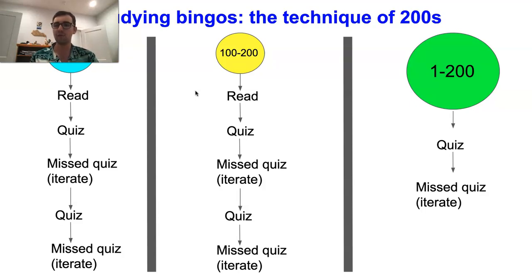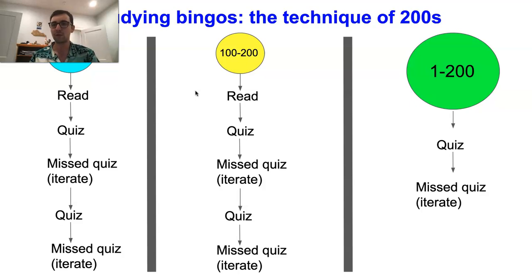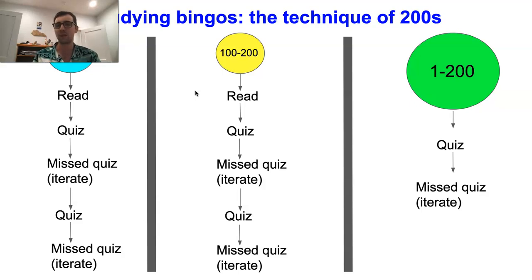I split the group of 200 into two smaller groups of 100. So let's say I'm studying my first 200 bingos ever — probability 1 through 200 sevens. My first group would be probability 1 through 100, and my second group would be probability 100 through 200. You'd use the same process for the eights. I'm going to take my first group and do a very similar process to what we've been discussing for some of the other word lists, starting by searching in Zyzzyva or Aerolith.